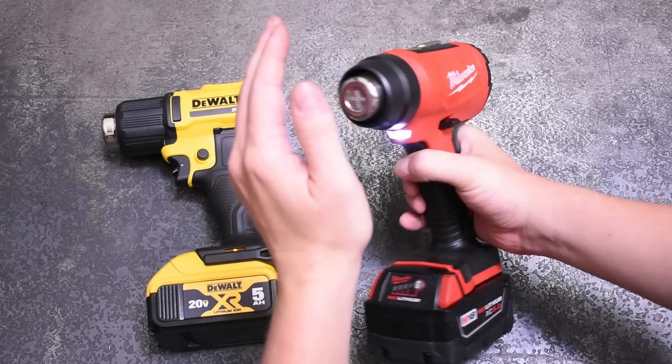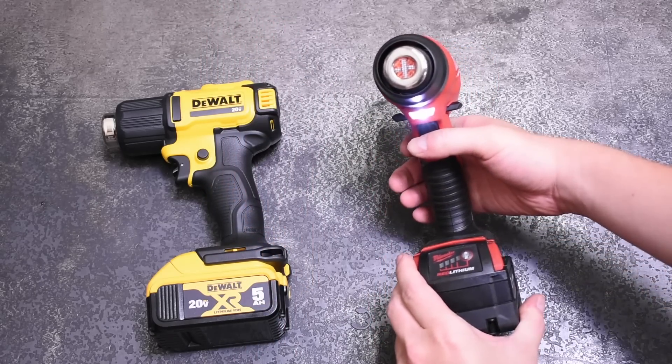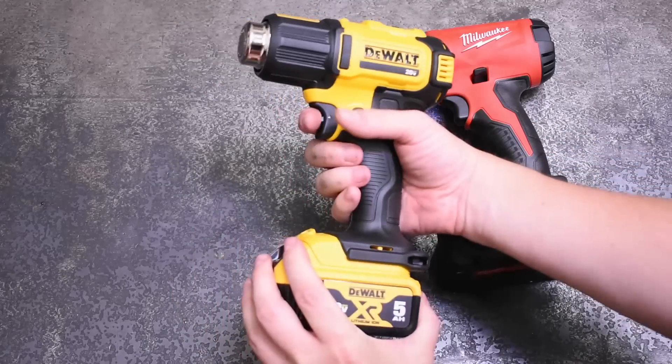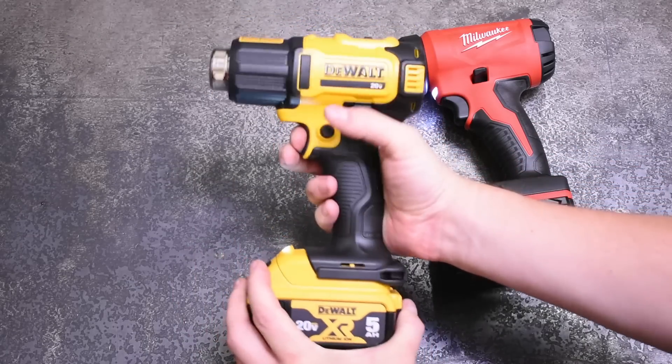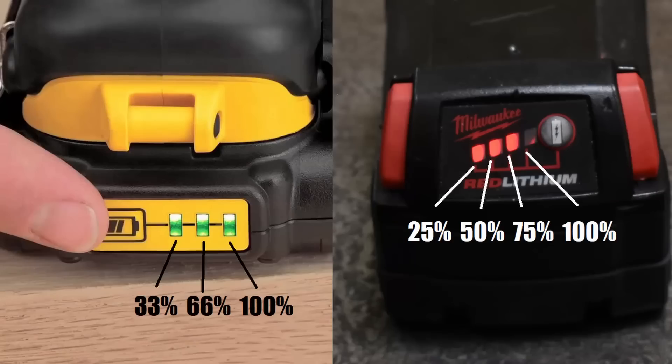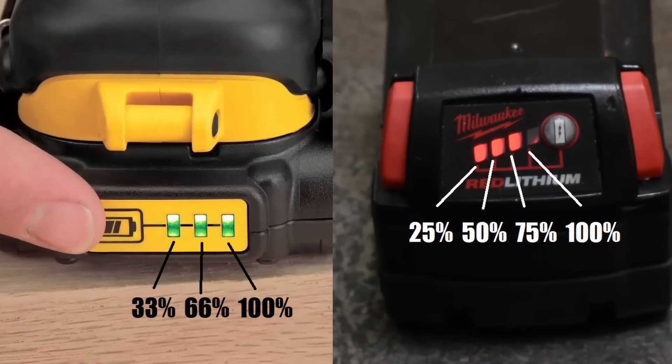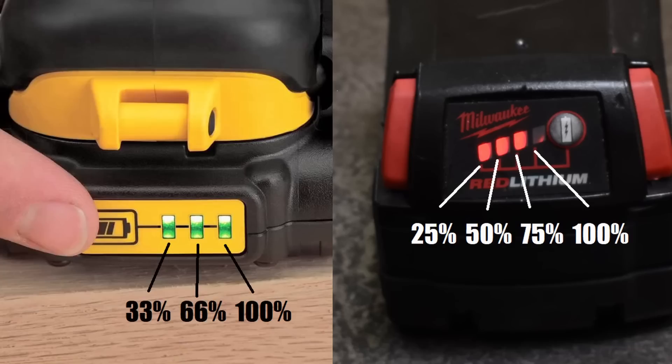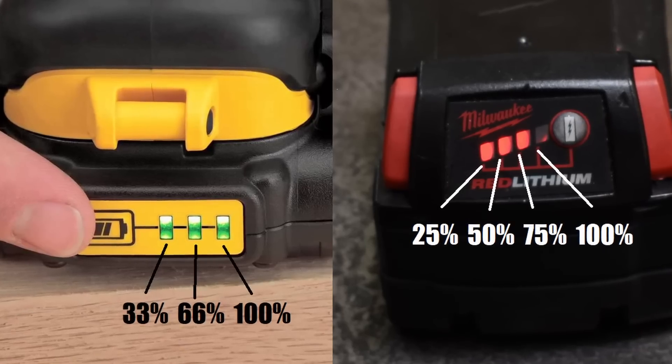What choosing Dewalt and Milwaukee allows us to do is see many different battery levels. Dewalt having three levels and Milwaukee having four means we can very roughly see power at 100%, 75% from Milwaukee, then 66% from Dewalt, and so forth, 50, 33, 25, and low or flashing from both.